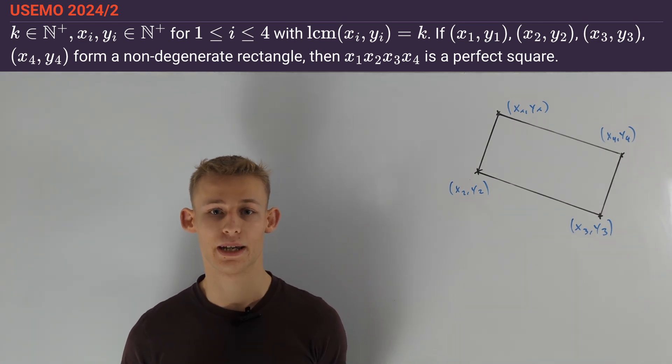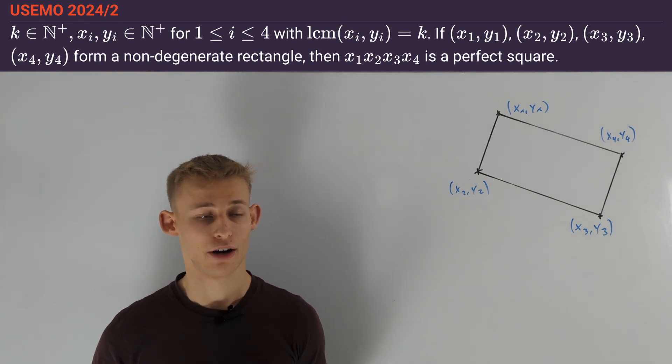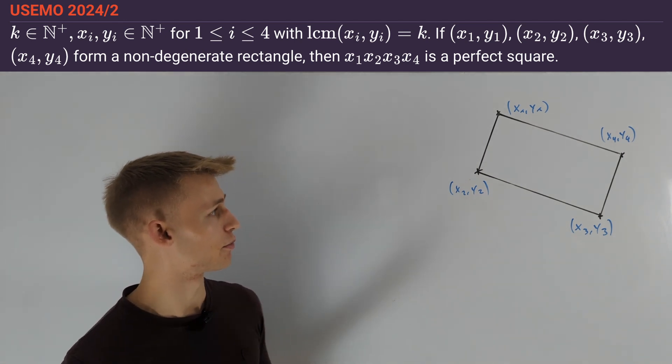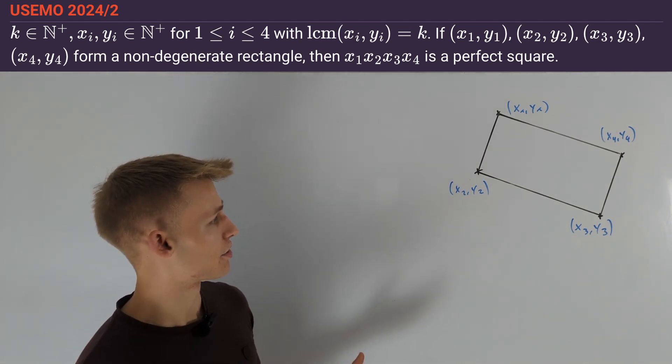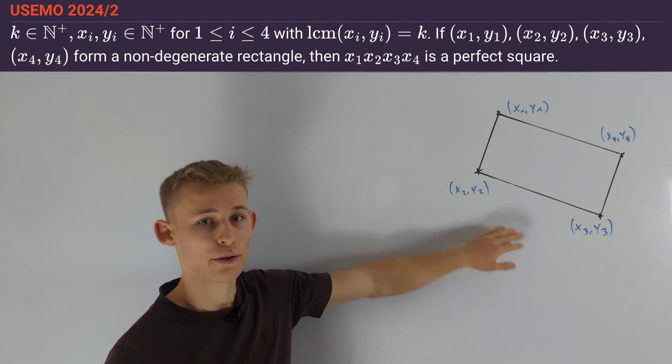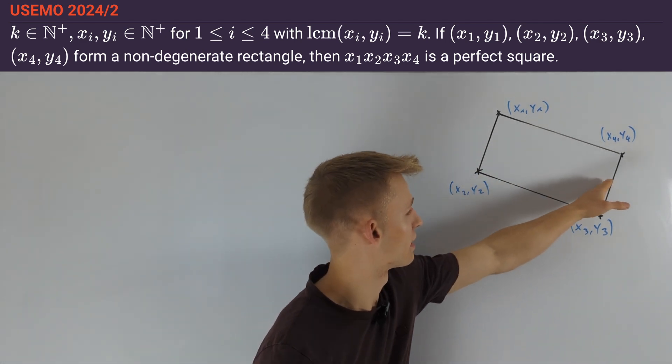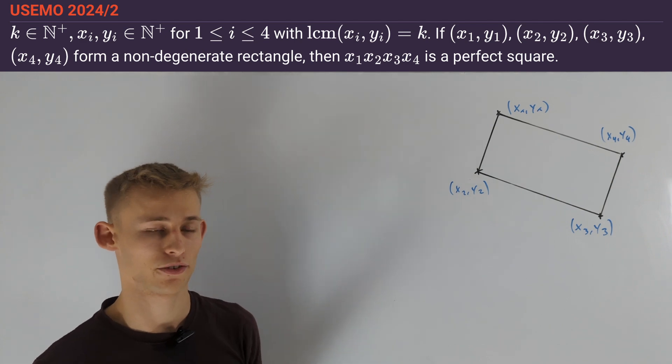Since we have to prove a number theoretic identity, our first step is to get some equations out of this condition here. We first use the property that two opposite sides in a rectangle have equal length and are parallel.